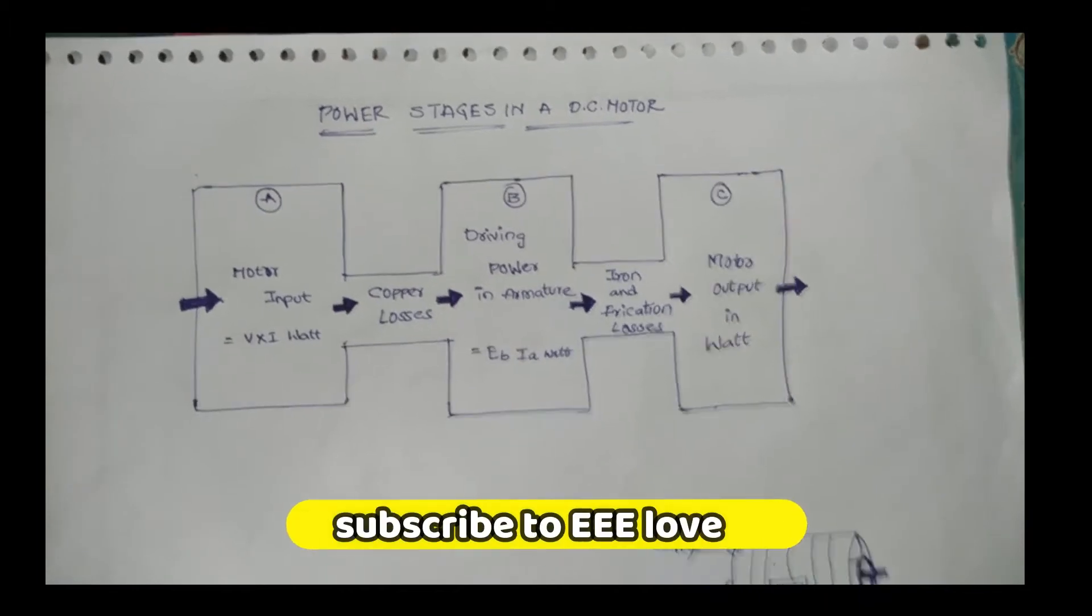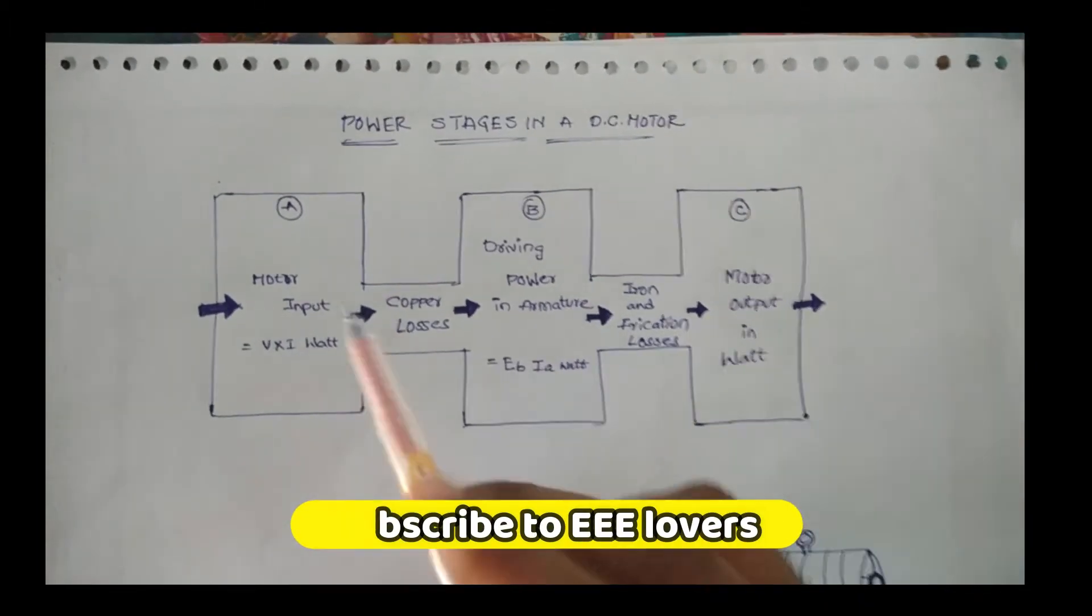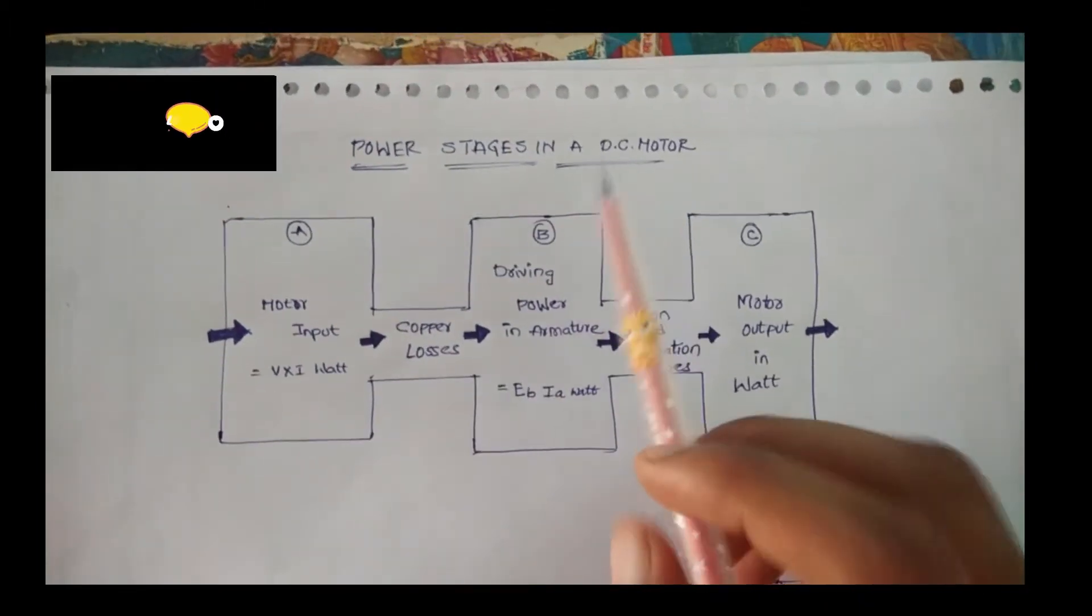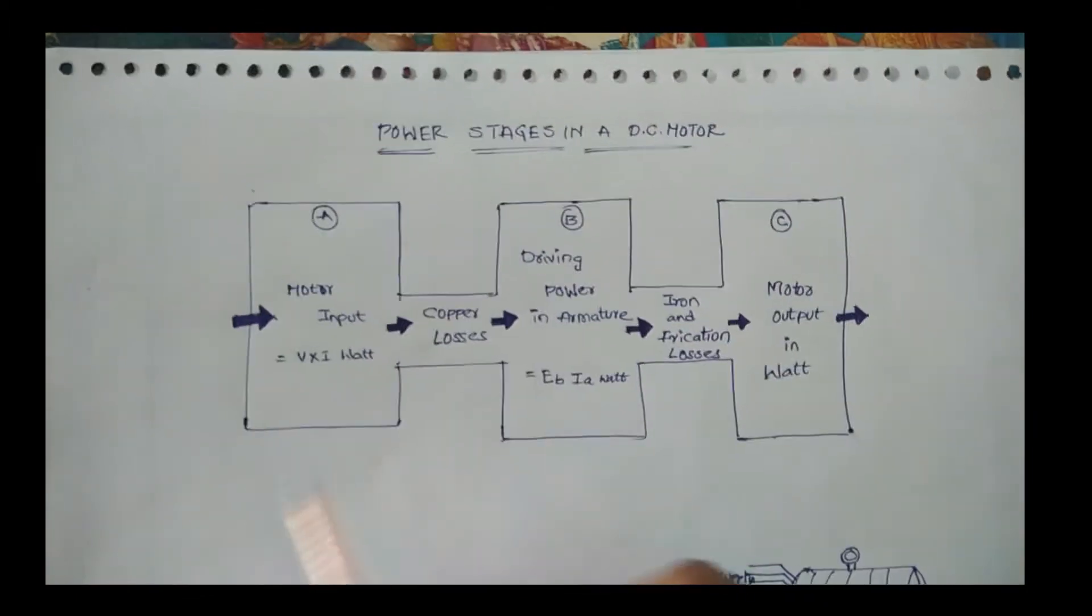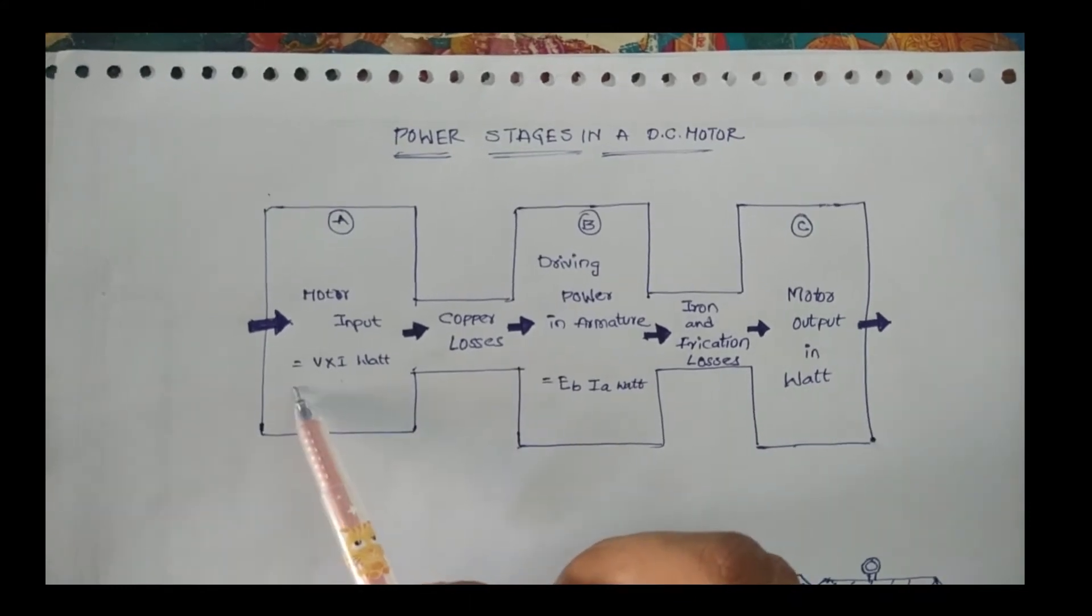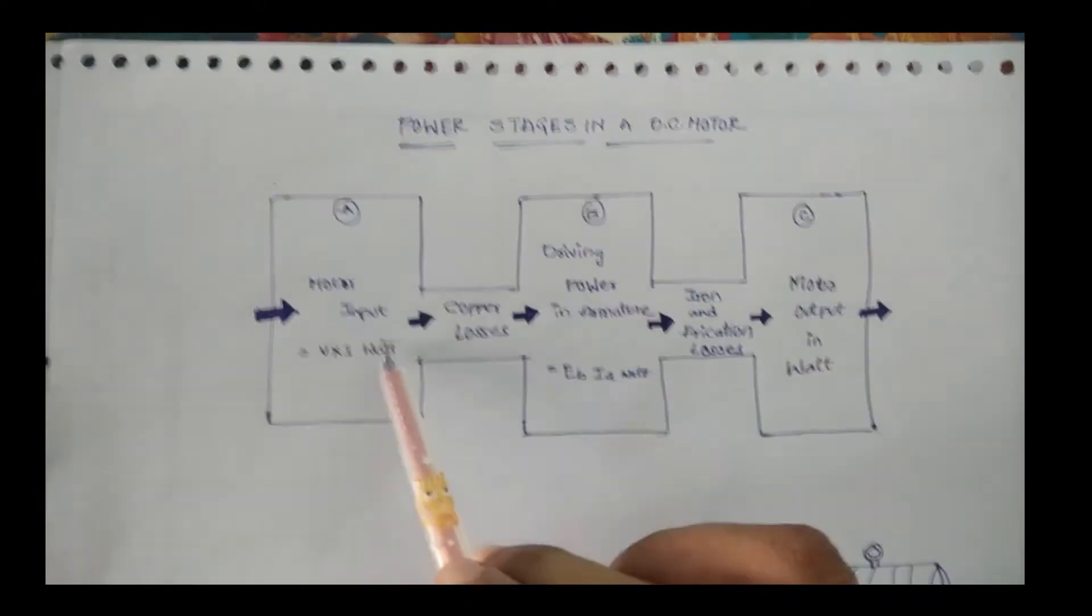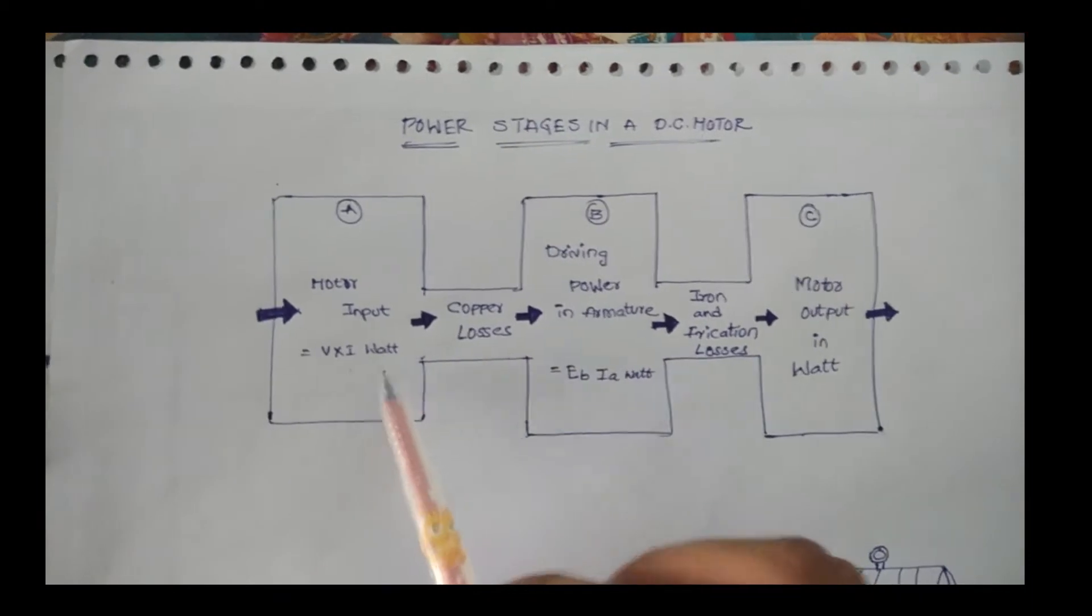Today we are going to discuss the power structure of the DC motor. We are giving the power input as V into I. Power P equals V into I. This is the motor input.